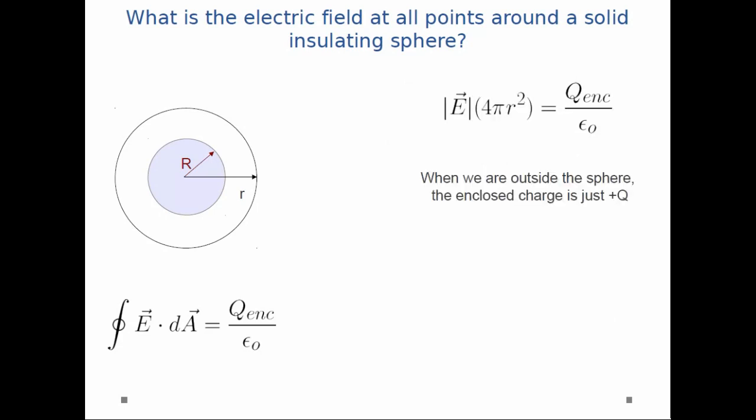And so now, if we are outside the sphere, the enclosed charge is just plus Q. And so, this simplifies down to kQ over r squared. This is exactly what we get with a point charge as well.